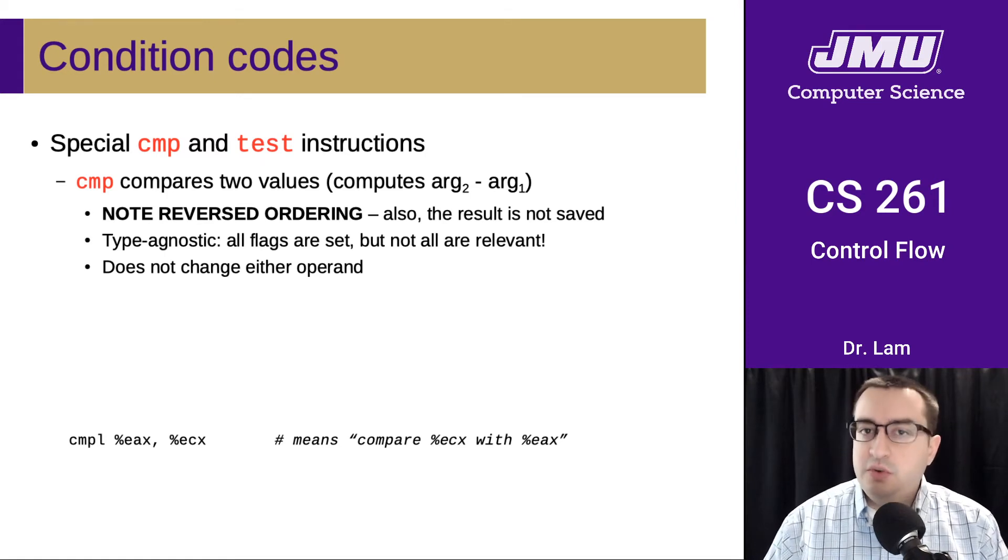Also note the reversed ordering. This is a super confusing aspect of this instruction. It basically subtracts the first argument from the second argument. So if you were reading this, you would tend to read this in reverse. If this were a subtract, it would be subtract EAX from ECX. So if we're going to compare it, it's really kind of comparing ECX to EAX.